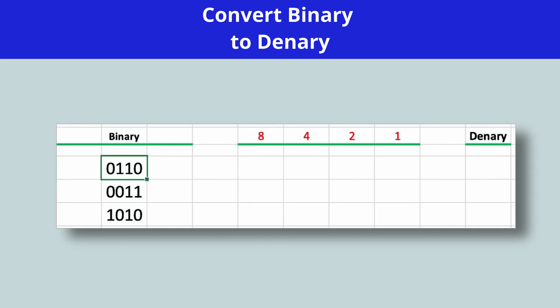Here I've got three binary numbers. Each binary number has four bits, and I have four columns that I'm going to use to help me do my conversion. Each column has a value: eights, fours, twos, and ones.